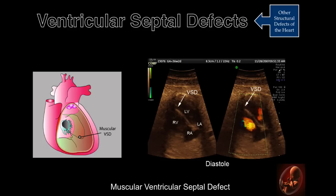This illustrates a muscular septal defect. The ultrasound consists of identical images, one without and one with color Doppler. The image on the left demonstrates the muscular septal defect. Because the image was obtained during ventricular diastole, no shunt is observed in the color Doppler image on the right.